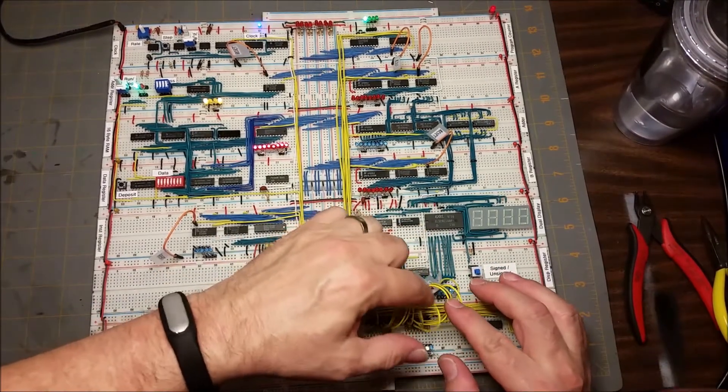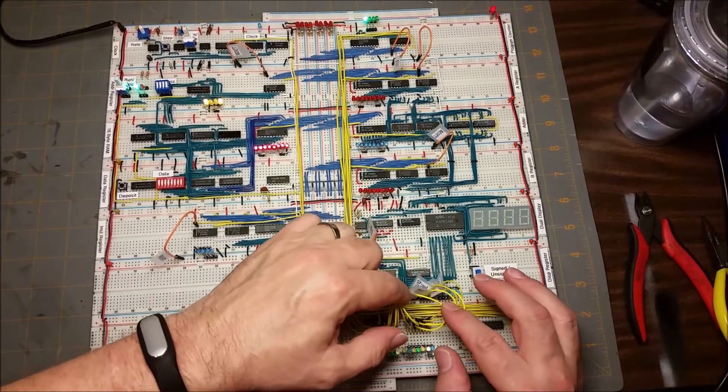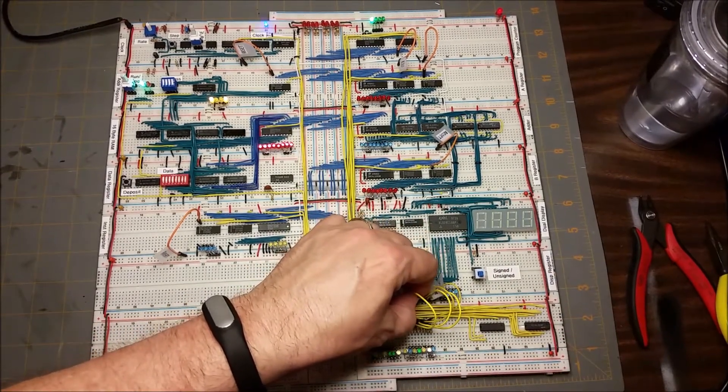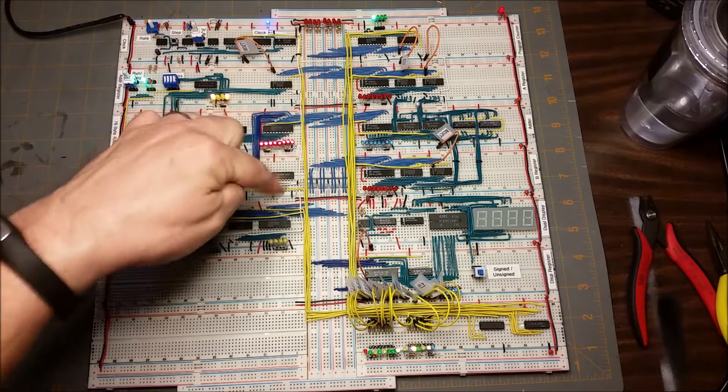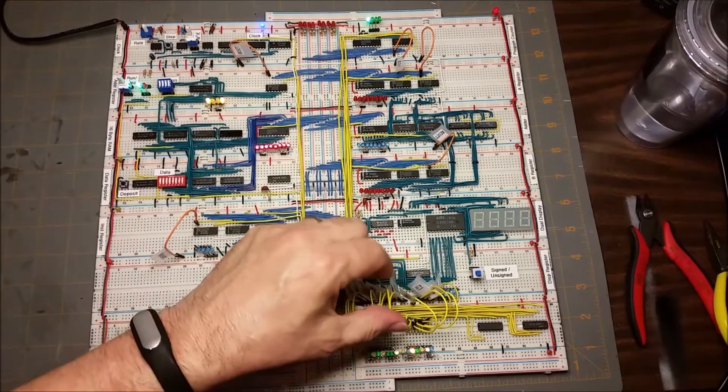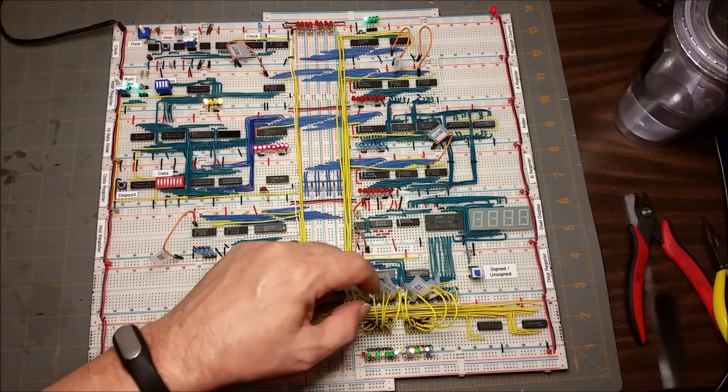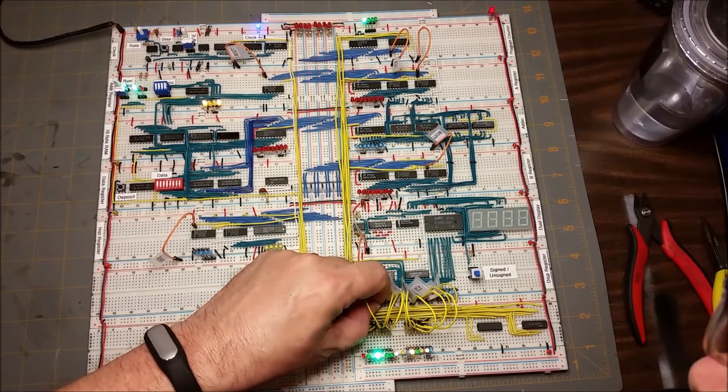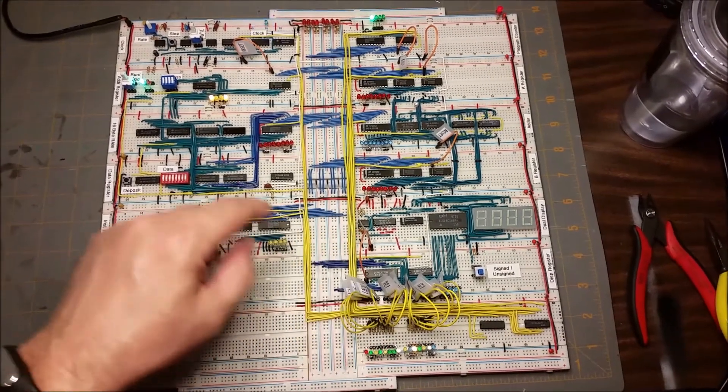So the A register's got a zero. Let's output the A register and we'll try it again. There's the A register outputting zeros now, and we'll try the RAM in again. Somewhere... there it is. Okay, bounced a couple times, but now we got the zeros written.